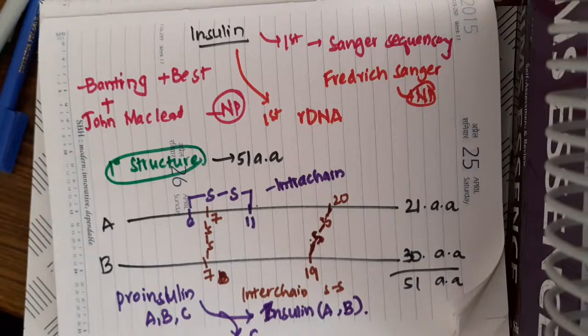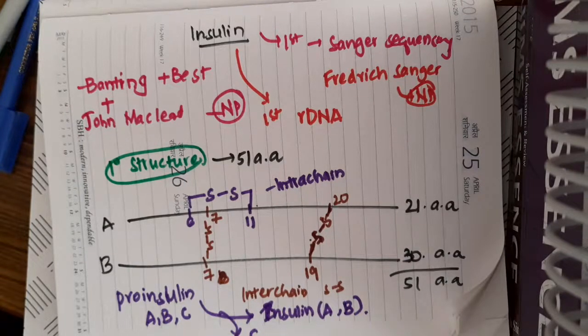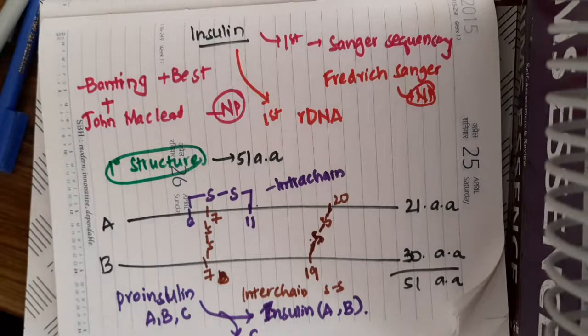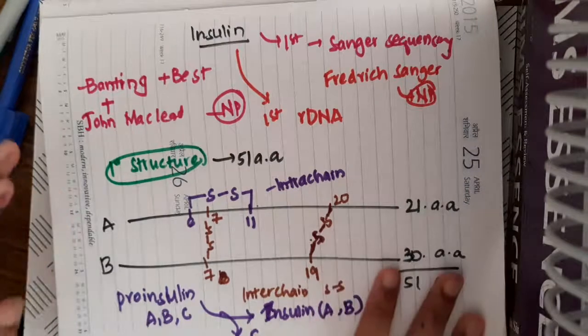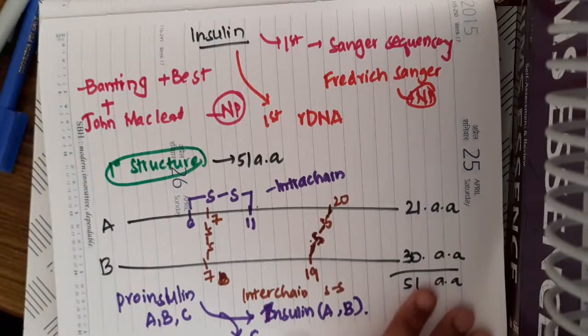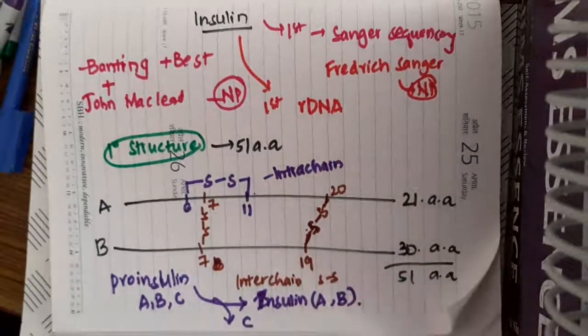If you see the species variation of insulin, this is mainly restricted to 8th, 9th and 10th amino acid in A chain, and C terminal amino acid of B chain. Though you don't remember that, that is fine. This is the important structure of insulin. Thank you guys for watching my lecture.